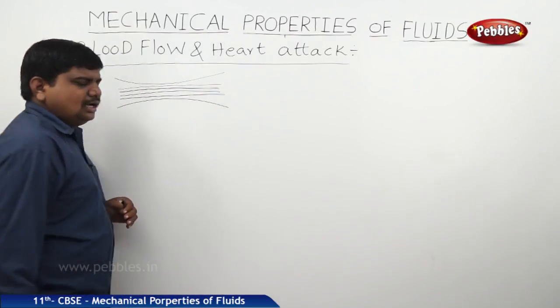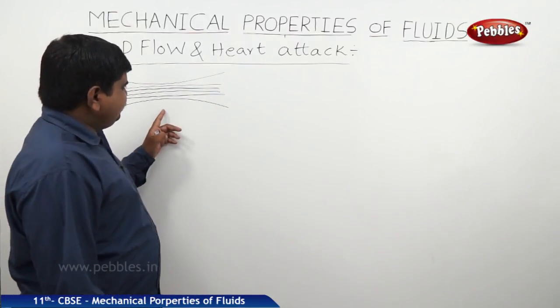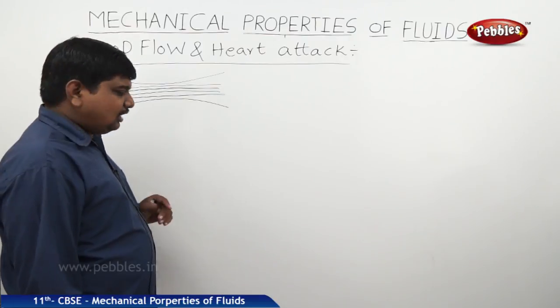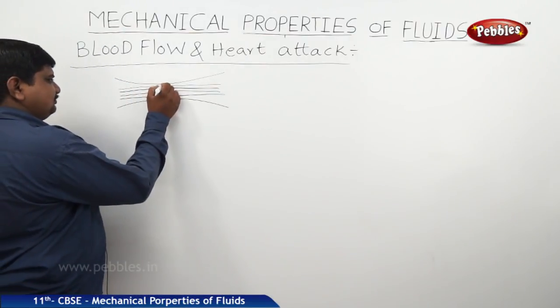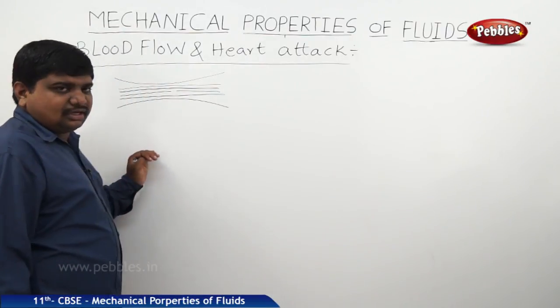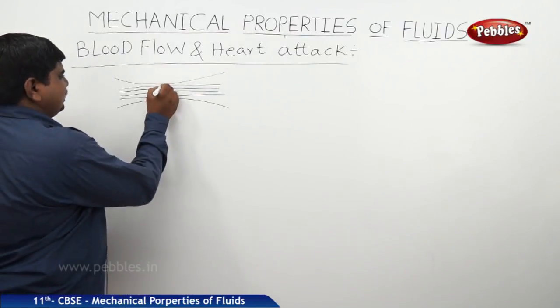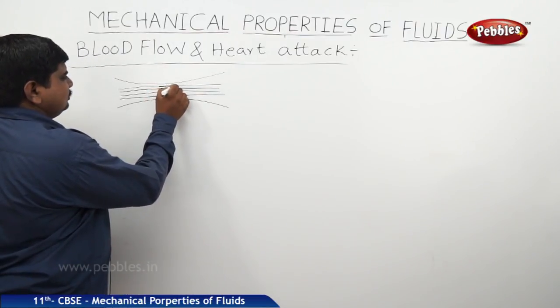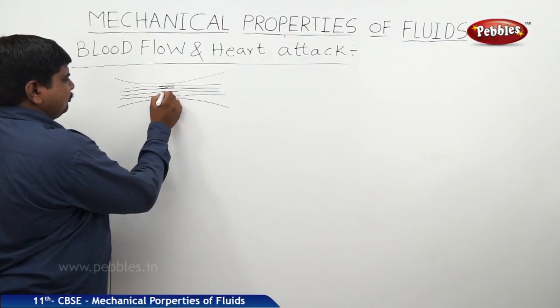Like this. This venturometer, once it is connected to the heart nerves—suppose these are the nerves which are connected to the heart.